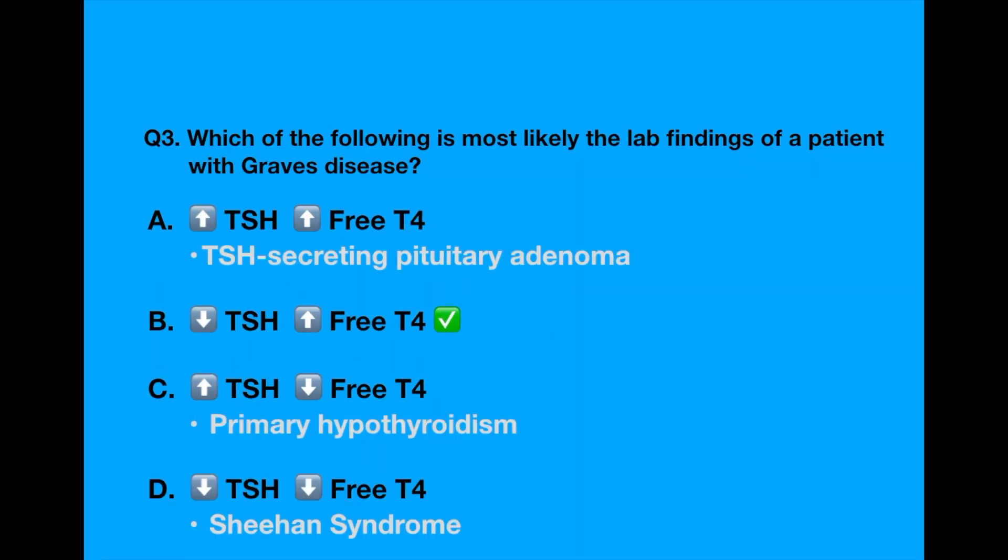High TSH and high free T4 can be seen in TSH secreting pituitary adenoma. High TSH and low free T4 can be seen in primary hypothyroidism and Sheehan syndrome presents with low TSH and low free T4.